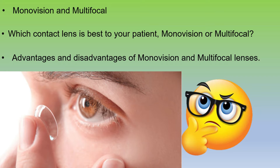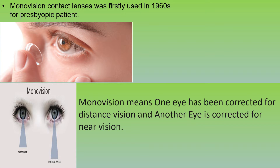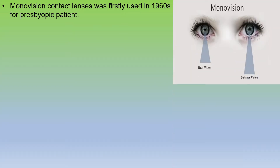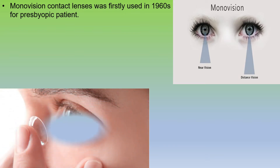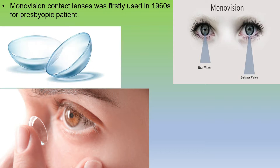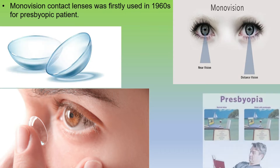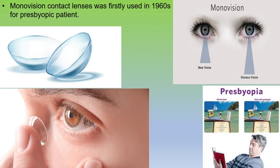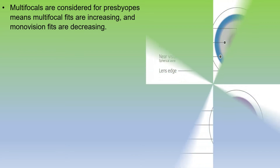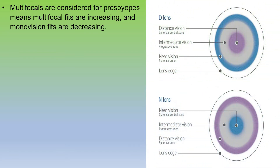Monovision contact lenses were first used in the 1960s for presbyopic patients. It was the most popular form of contact lenses used for correction of presbyopia. However, it has been surpassed by soft multifocals in the past few years. Nowadays, multifocals are considered for presbyopes, meaning multifocal fits are increasing and monovision fits are decreasing.